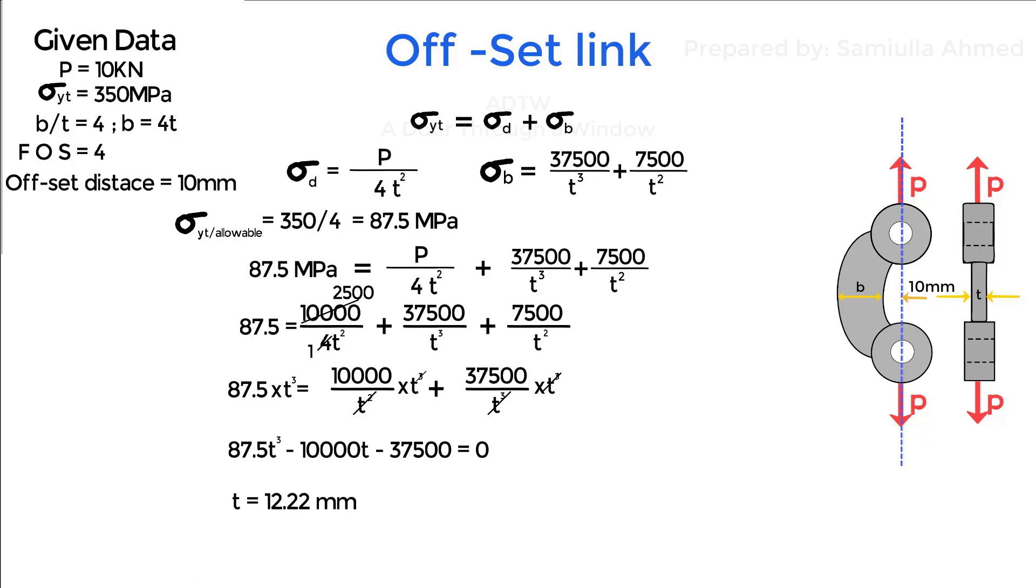Since we know width is 4 times t, therefore width is equal to 4 into 12.22 which is 48.88 millimeters. Hence we found out width and thickness of the offset link.